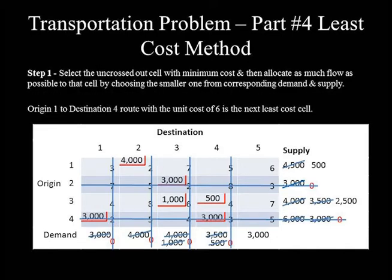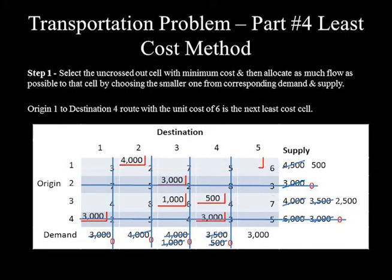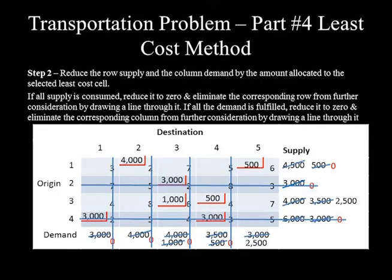From the five columns, only column 5 remains uncrossed. The undeleted cells in this column are Origin 1 to Destination 5 with a unit cost of 6, and Origin 3 to Destination 5 with a unit cost of 7. Since 6 is less than 7, the next least cost cell is Origin 1 to Destination 5. Supply is 500 and demand is 3,000, so the smaller — 500 — is allocated. This reduces supply from 500 to 0 and demand from 3,000 to 2,500. Since Origin 1 supply is consumed, row 1 is deleted.